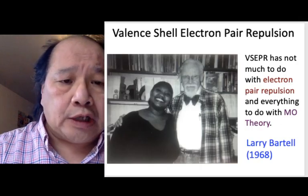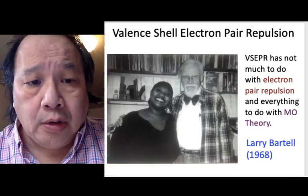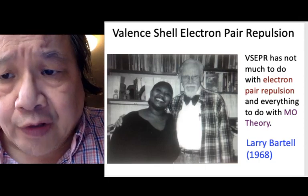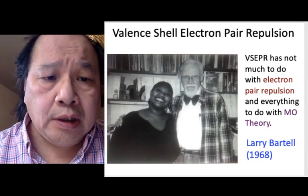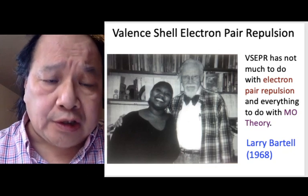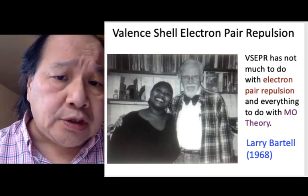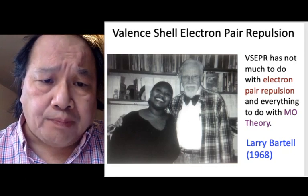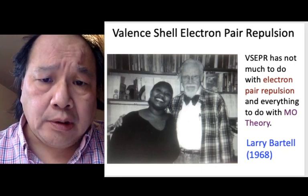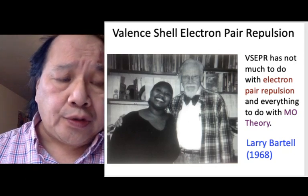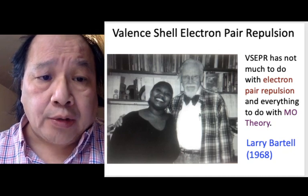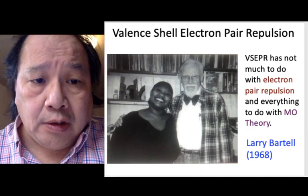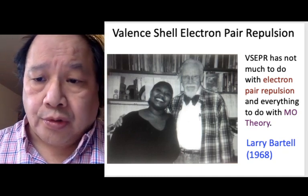The scientist I'd like to talk about is Larry Bartel, who is not the scientist who made valence shell electron pair repulsion theory. He's the scientist who discovered in the 1960s that valence shell electron pair repulsion doesn't have anything really to do with electron pair repulsion. It has everything to do with a theory called MO theory — molecular orbital theory — which is going to be one of the major topics in the last portion of this course.